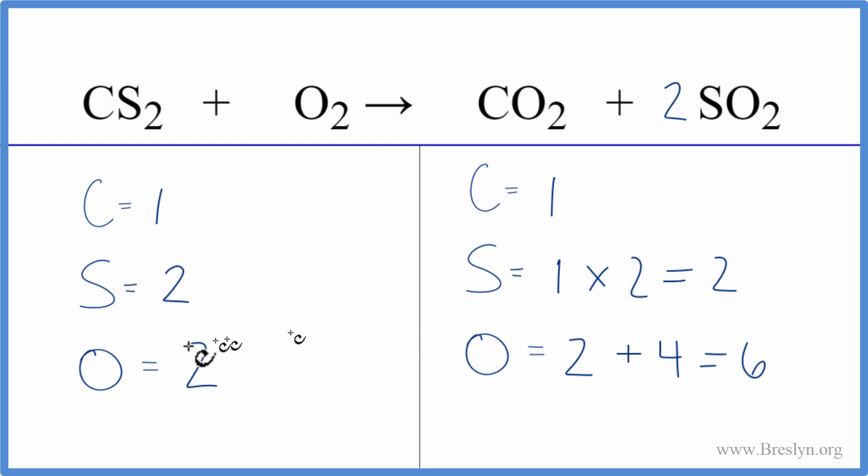That's pretty easy to fix because we have two here. If we multiply this by three, that'll give us six. So we put our coefficient of three. Two times three, that gives us six.